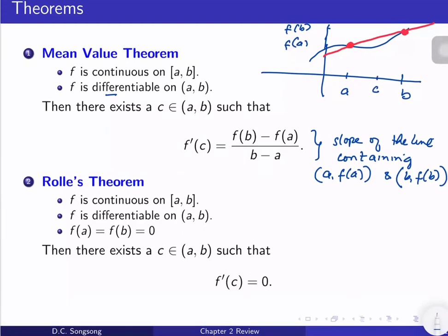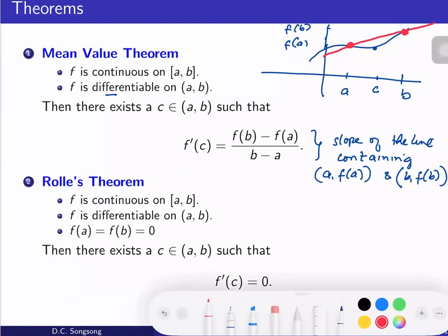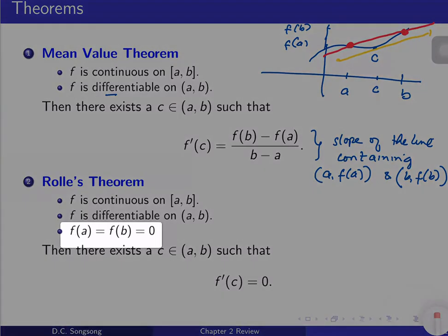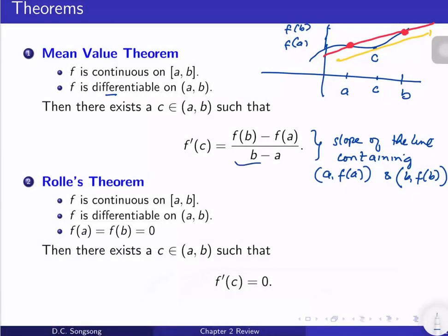That slope equals f′(c) for some c in (a,b). Rolle's theorem is simply a specific case of MVT where f(a) and f(b) are both equal to zero. If we plug that into MVT, f(b) − f(a) = 0, which means f′(c) = 0. So if the function is continuous and differentiable on the closed interval with f(a) = f(b) = 0, then you will always have a horizontal tangent line somewhere in between.